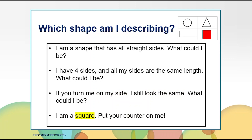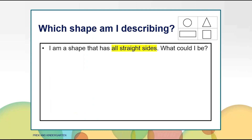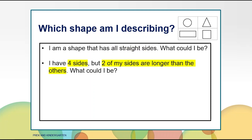Let's try to guess another shape. Here is the first clue: I am a shape that has all straight sides. What could I be? Put your counter on the shape you think I am talking about. Here is the second clue for the same shape. Listen carefully. I am a shape that has all straight sides. I have four sides but two of my sides are longer than the others. What could I be?